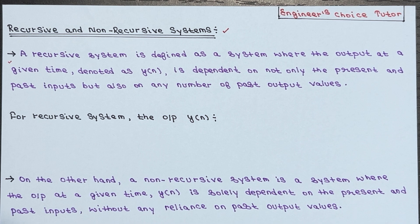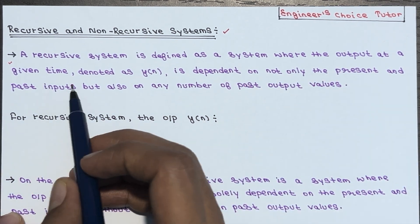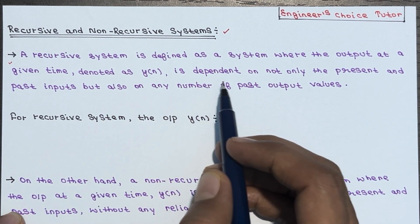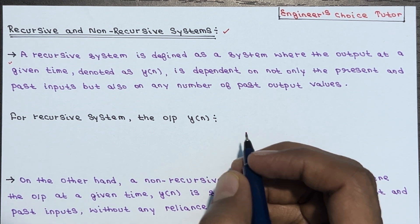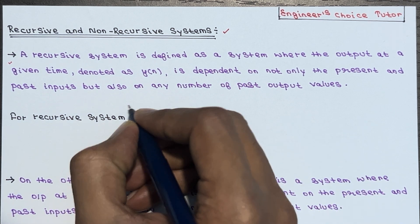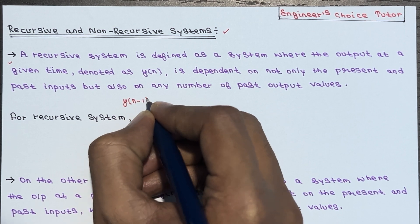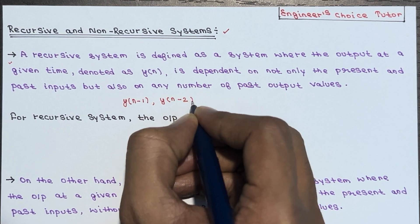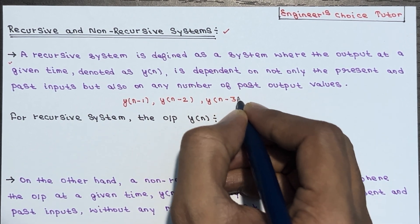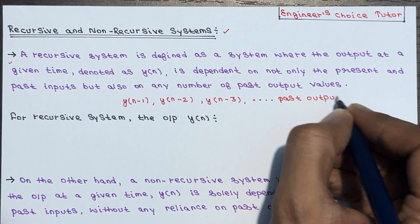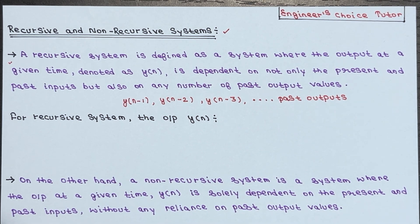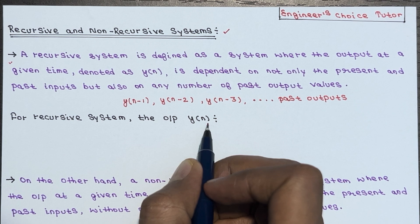In other words, it's all about the history. So the definition of a recursive system is: a system where the output at a given time, denoted as y of n, is dependent not only on the present and past inputs but also on any number of past output values. So past output values means y of n minus 1, y of n minus 2, y of n minus 3, and so on — these are basically past outputs.